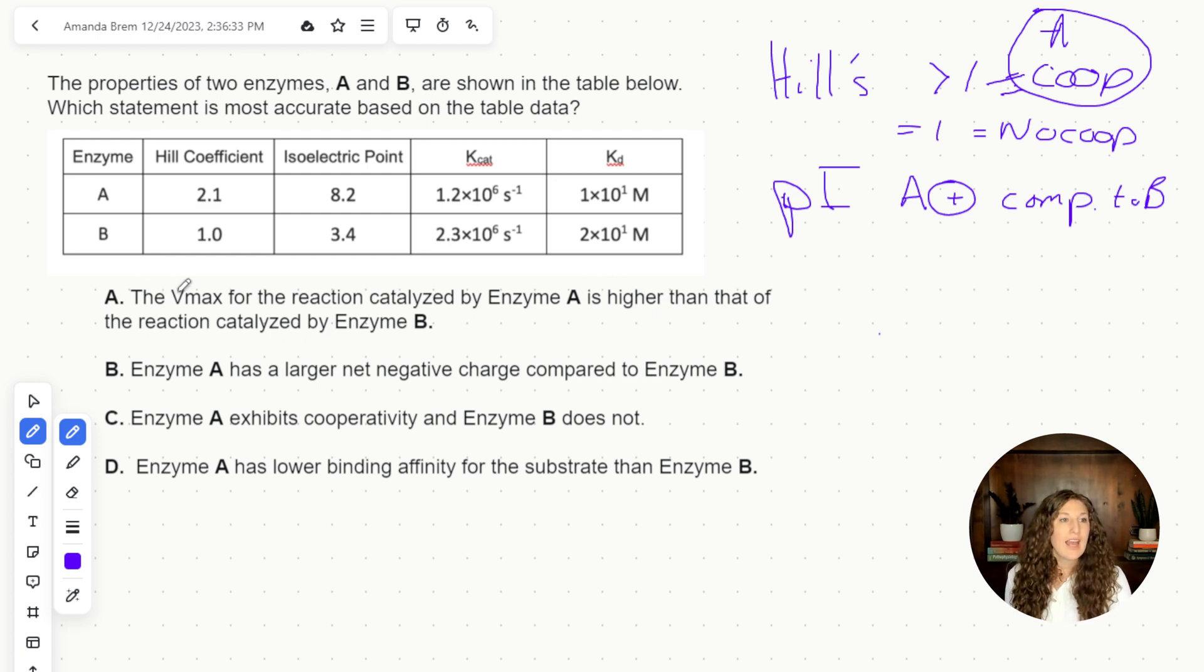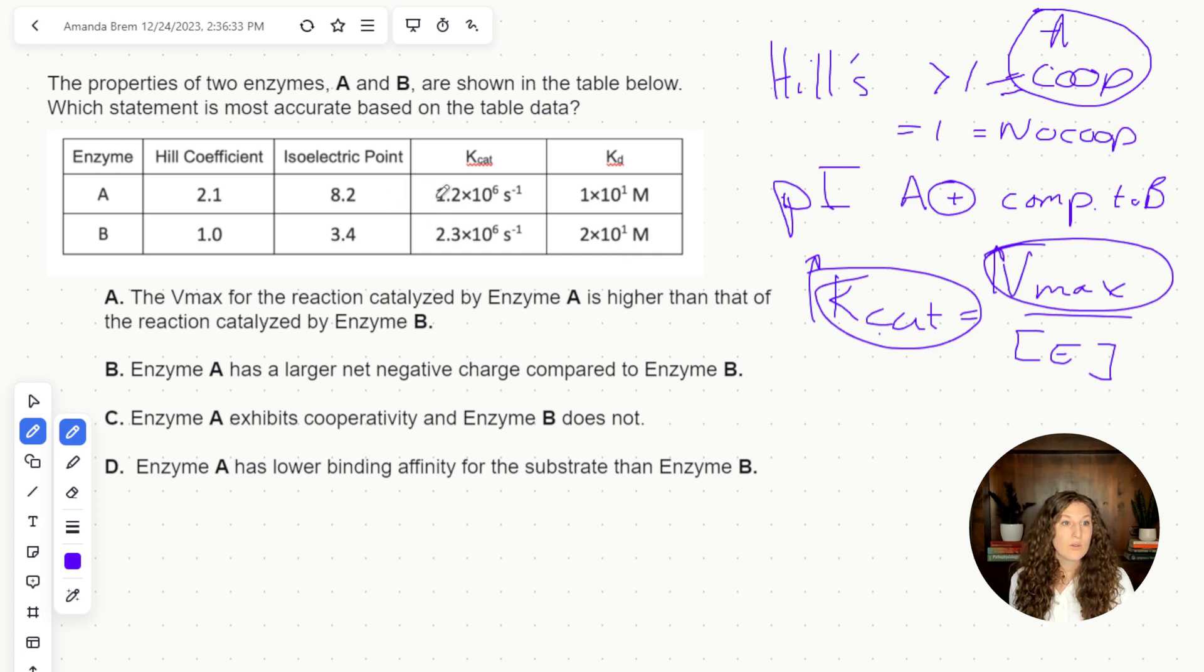So let's go through. First up, A, the Vmax for the reaction catalyzed by enzyme A is higher than that of the reaction catalyzed by enzyme B. So we remember from our previous question that Kcat is Vmax over enzyme concentrations. There's a direct relationship between Vmax and Kcat. So if Kcat is bigger, Vmax will also be bigger. So we can look and say, nope, Kcat is bigger for B than it is for A. So A is actually opposite because our Kcat, therefore Vmax is lower.